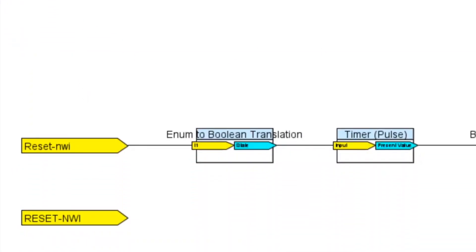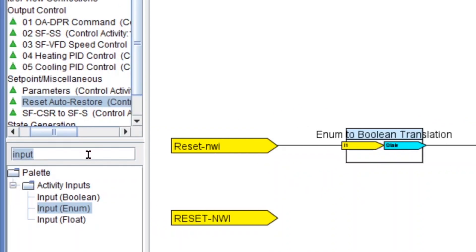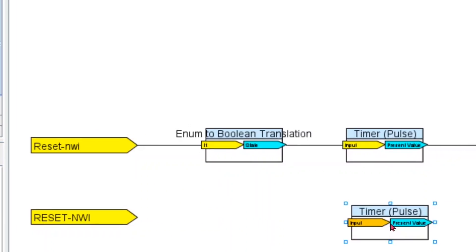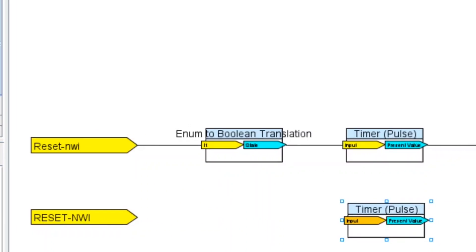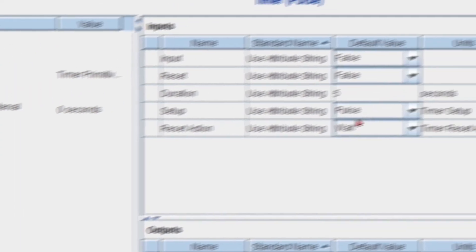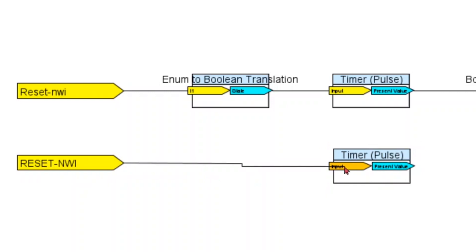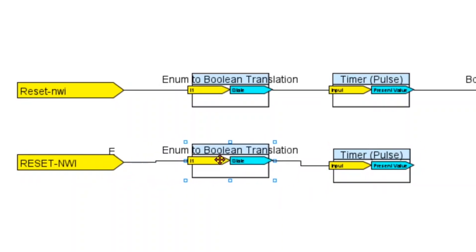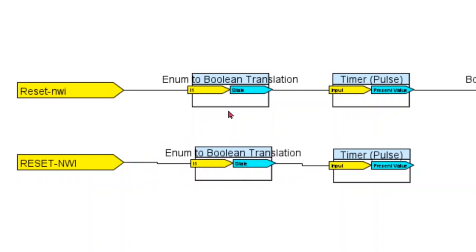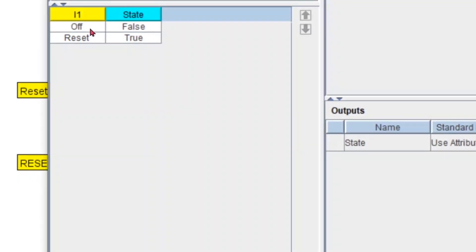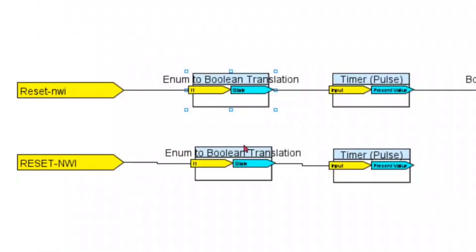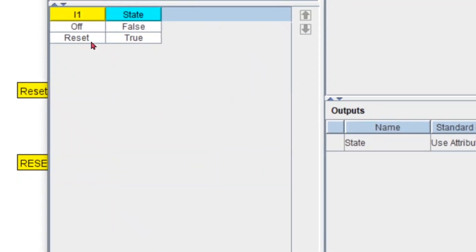Then I know I need an enum to boolean translation. If I do this trick — go to timer and drag it over — we want a five-second pulse. By default that's what we have, so we don't really have to do anything. If I try to connect and make a straight connection, you'll see that it automatically makes the translation. And it makes the right translation because we want off for false and reset for true. So: off equals false, reset equals true.